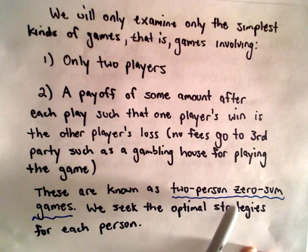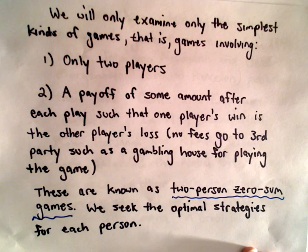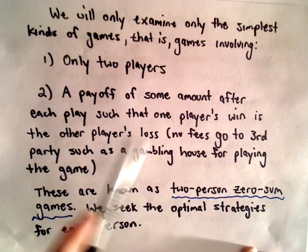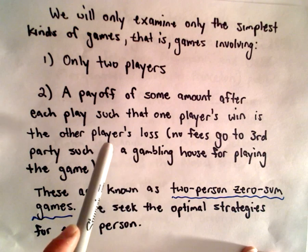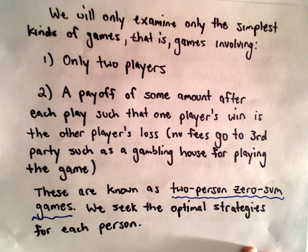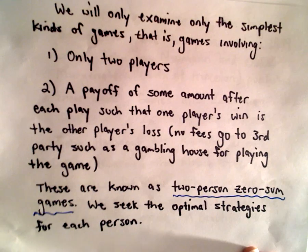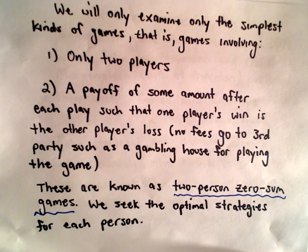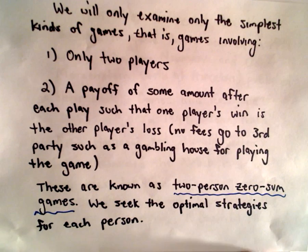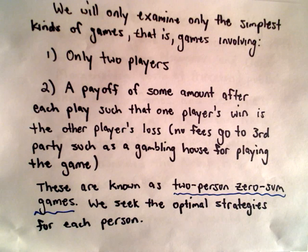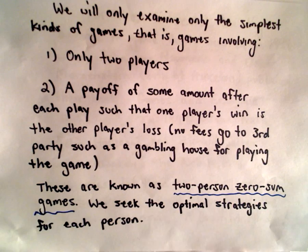Two-person: we've got two people. Zero-sum means the net change is zero — if one person wins a dollar, the other person loses a dollar. So no new amount of money is introduced to the game, if you want to think about it that way. We're going to seek optimal strategies for each person — that's the goal here, finding the best course of action.